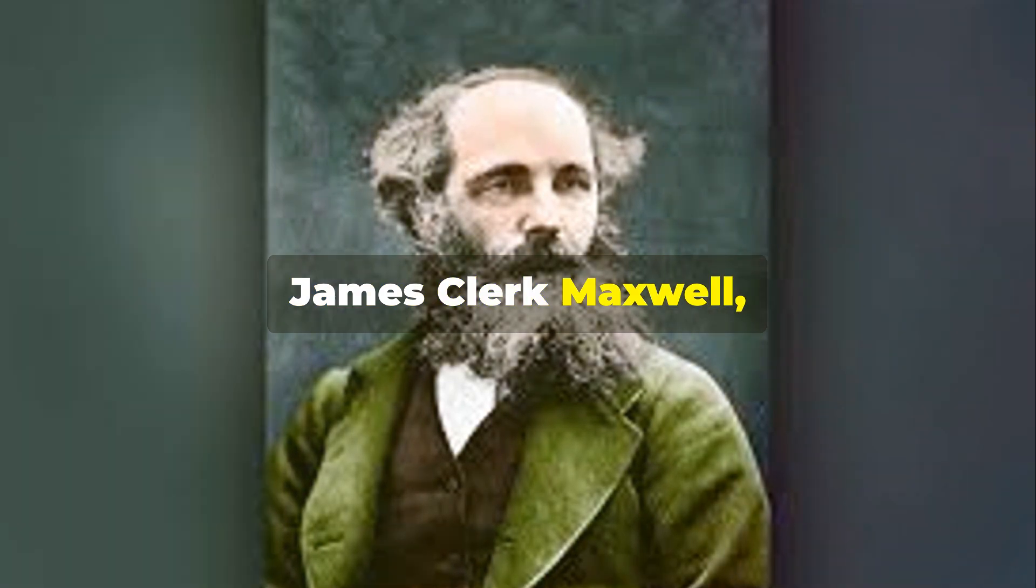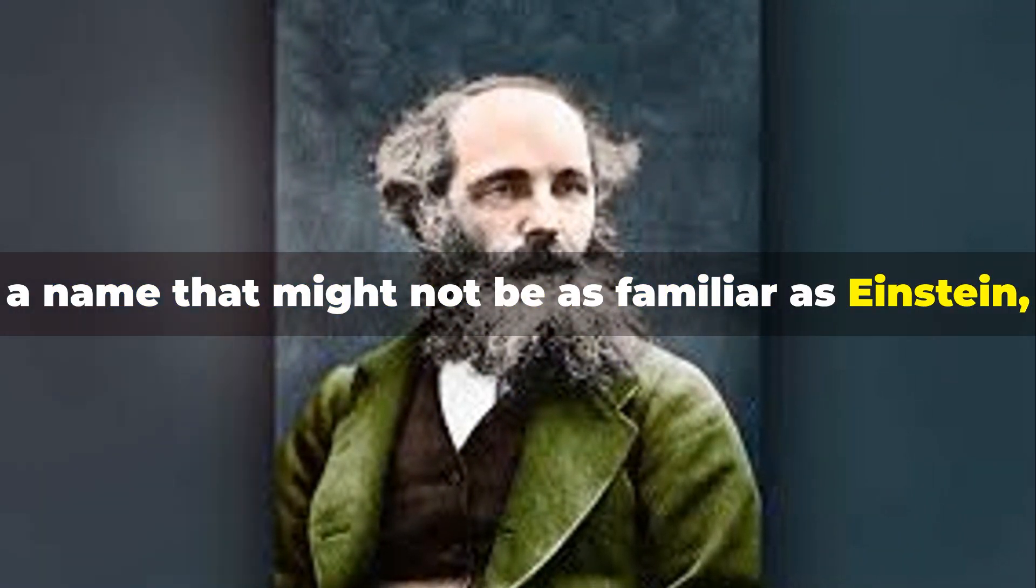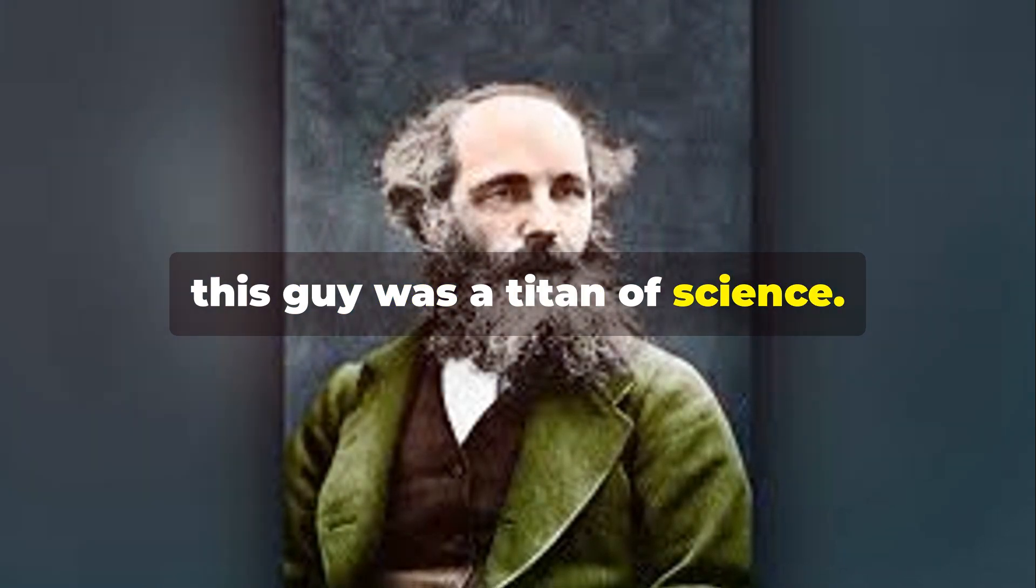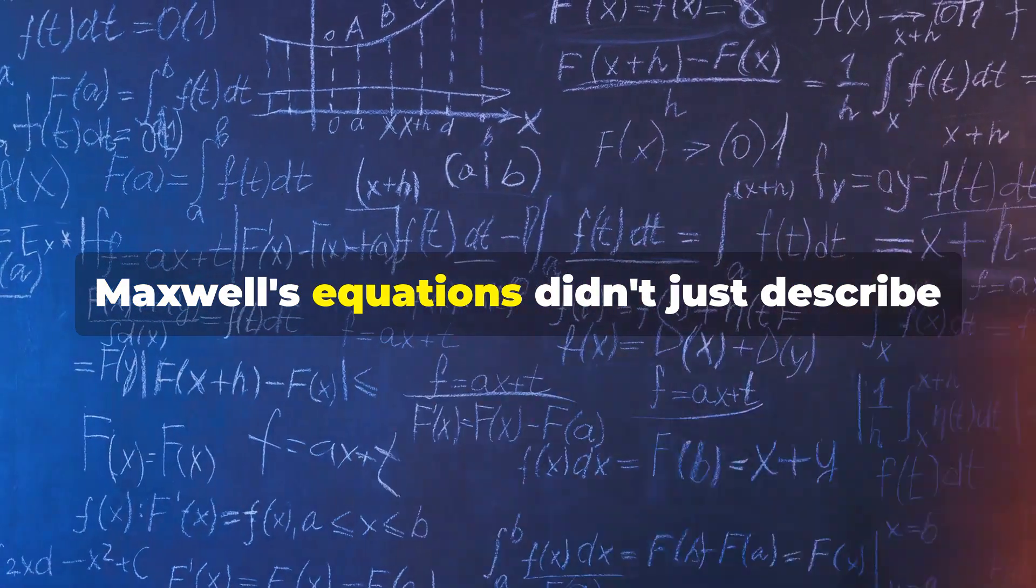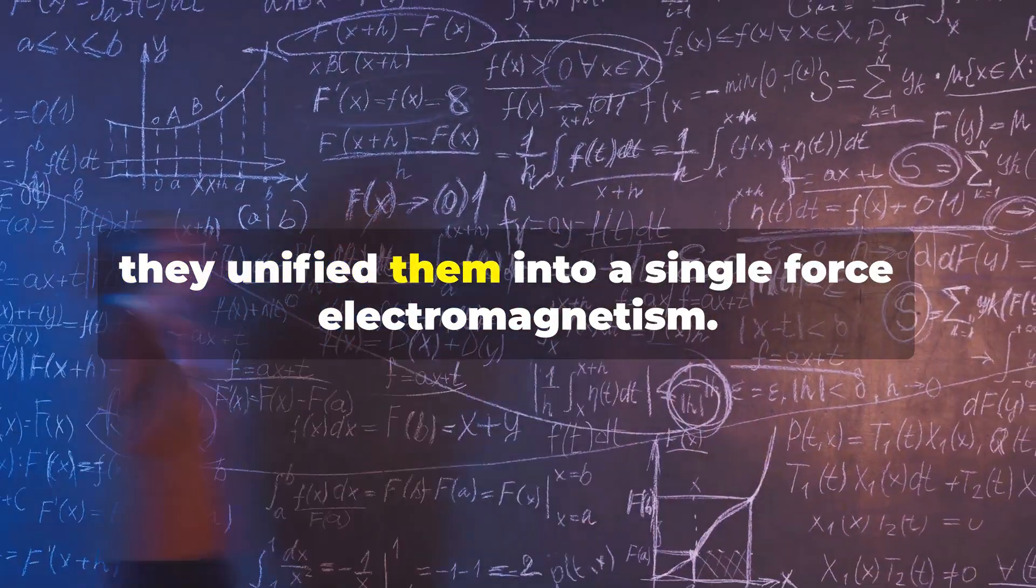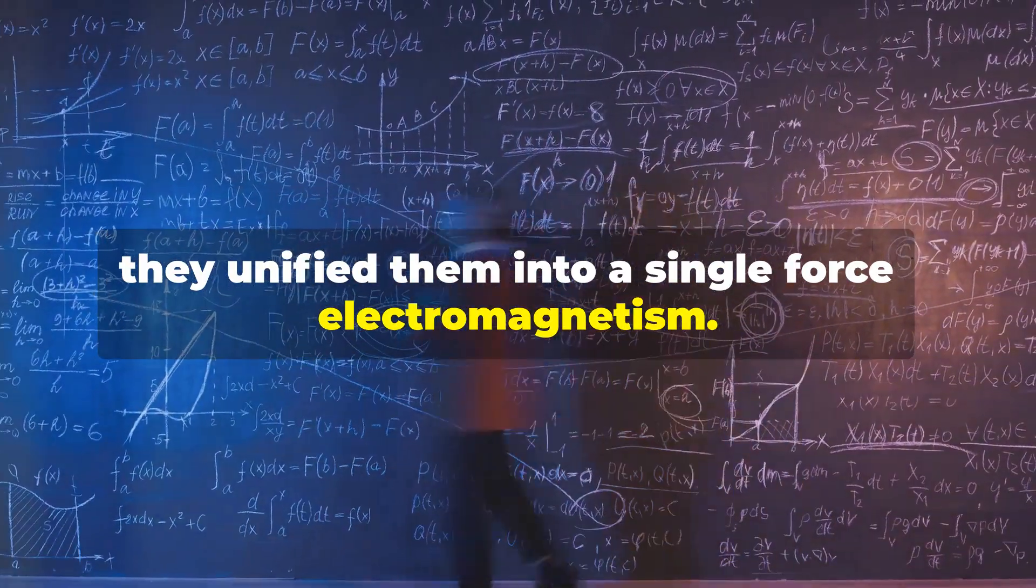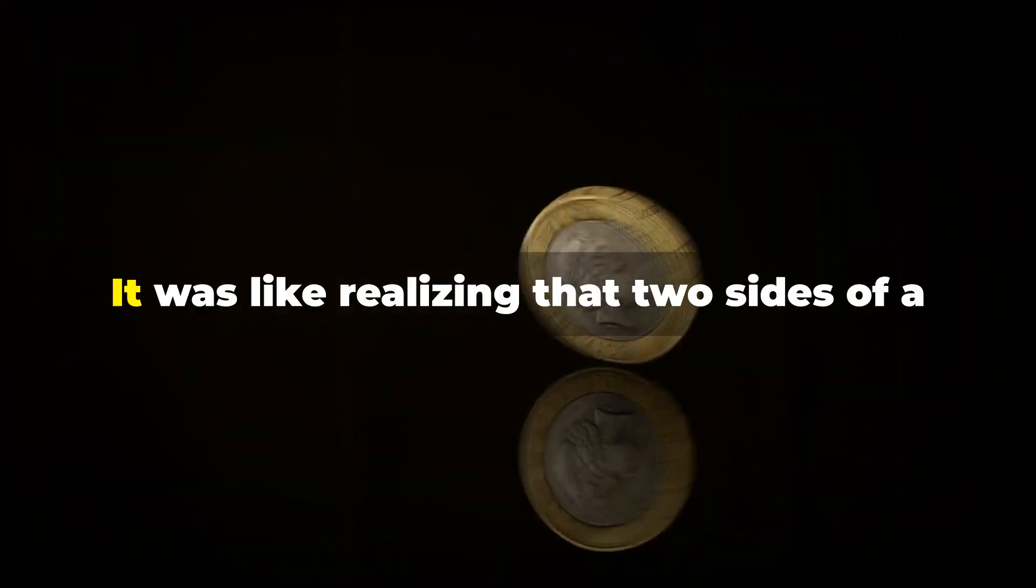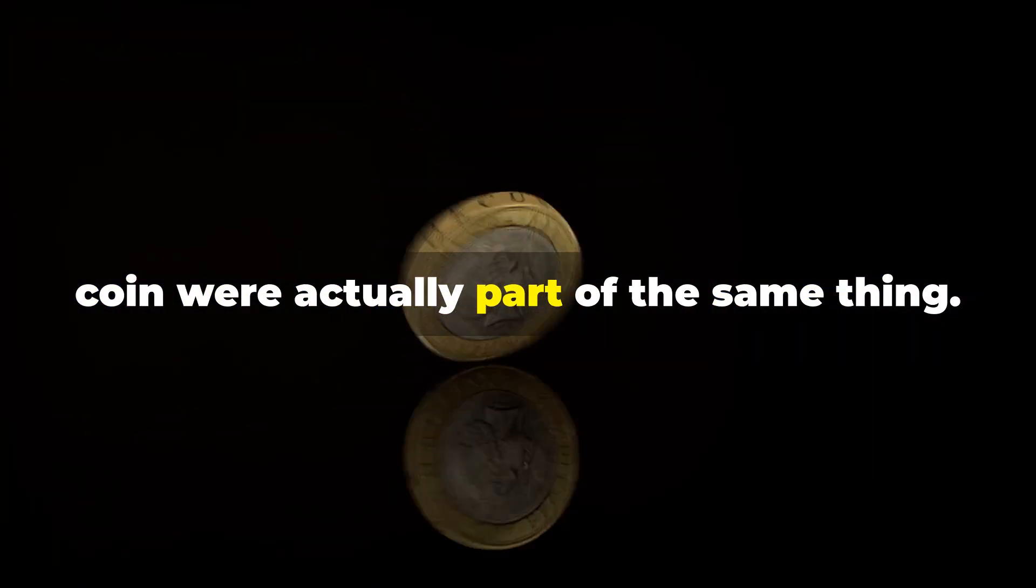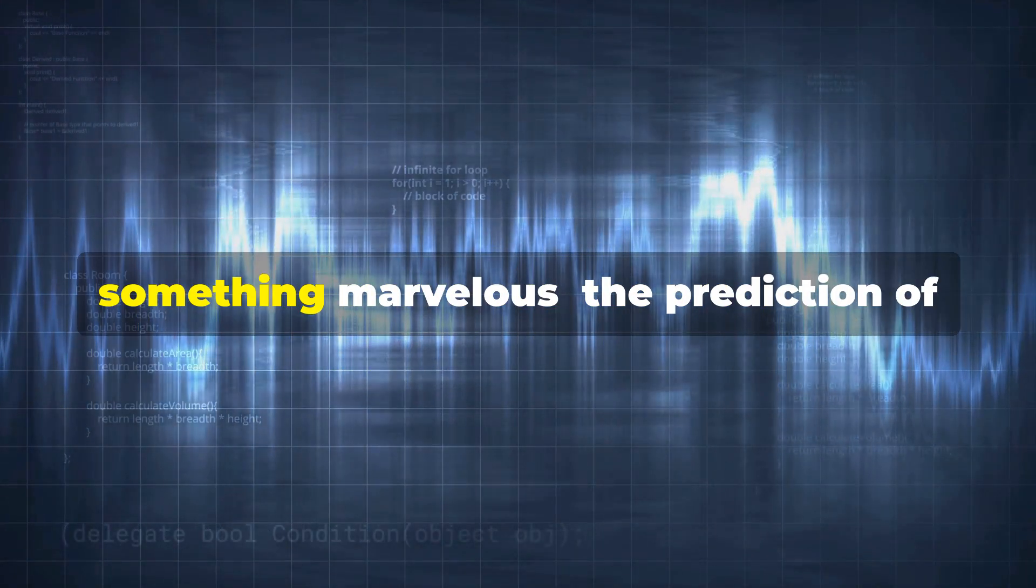James Clerk Maxwell, a name that might not be as familiar as Einstein, but trust me, this guy was a titan of science. Maxwell's equations didn't just describe electricity and magnetism, they unified them into a single force: electromagnetism. This was huge. It was like realizing that two sides of a coin were actually part of the same thing, and from this unification sprang something marvelous.